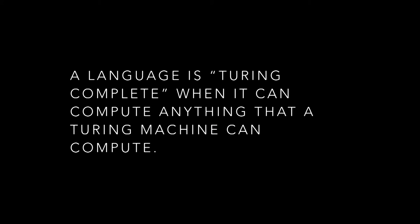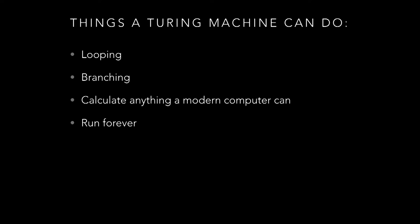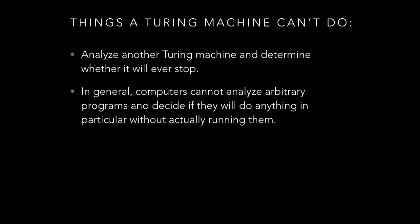A language is called Turing complete when it can compute anything that a Turing machine can compute with the help of a computer. Some things a Turing machine can do: looping and branching — it can calculate stuff that your laptop can do. But a Turing machine can also run forever. We call this an infinite loop in our code. Something a Turing machine definitely cannot do is analyze the instructions given to another Turing machine and determine whether or not that machine will ever stop — and in general, computers can't decide much about other programs, because you can almost always transform any question about how a program will behave into whether or not another program will stop.